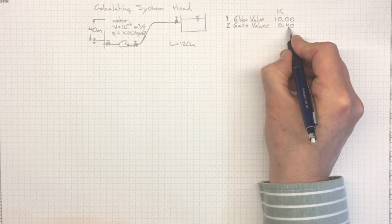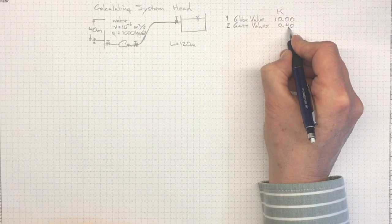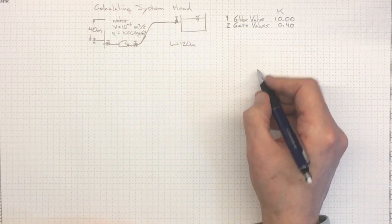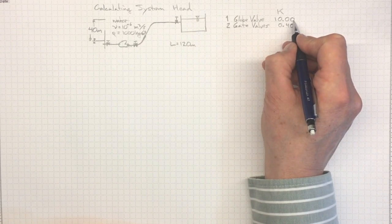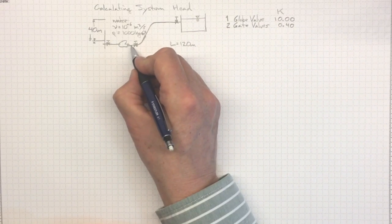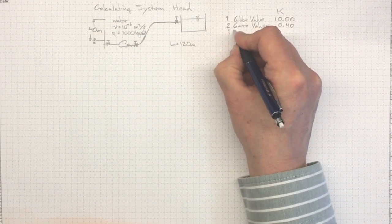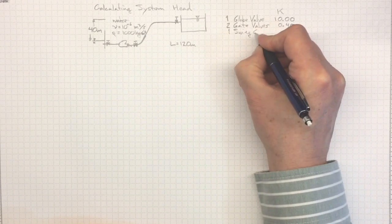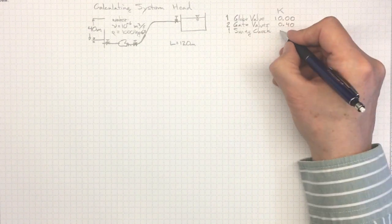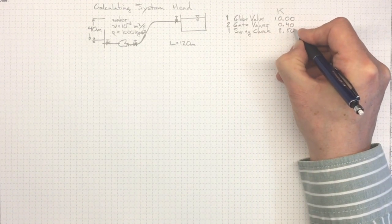Much lower loss across a gate valve, because it just opens wide, basically pulling a gate back out of the pipe, than through a globe valve, which has got much more convoluted passages. We've got a swing check valve here. And its loss coefficient is somewhere in the middle, round about 2.5.